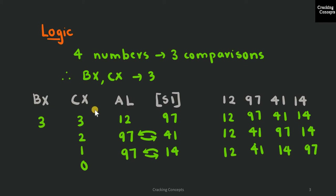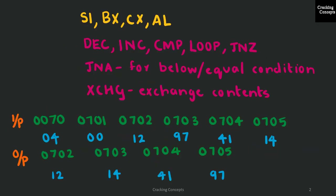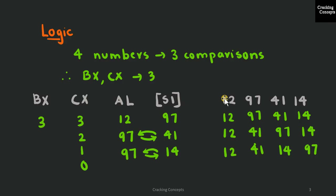This is how we track the register values at each iteration. BX and CX will be 3 at the beginning of each set. AL and SI hold the numbers to be compared, starting with the initial input of 12, 97, 41, and 14. We compare the values at AL and SI — since AL is lesser, no swapping is needed. The LOOP instruction decrements CX to 2, then we compare 97 and 41. Since 97 is greater, we swap, giving 12, 41, 97, and 14.